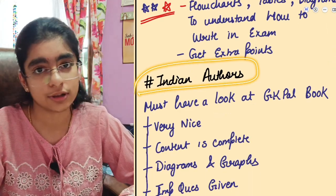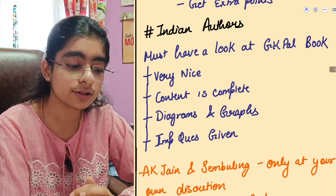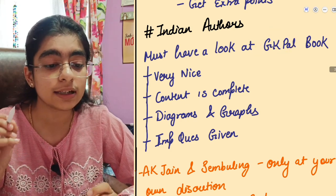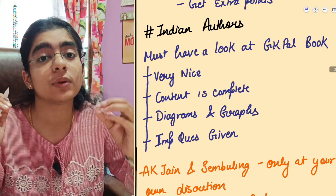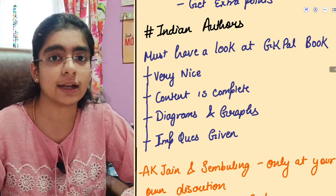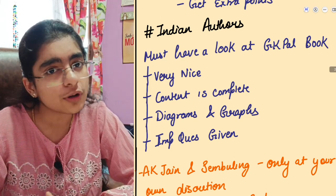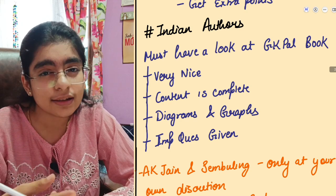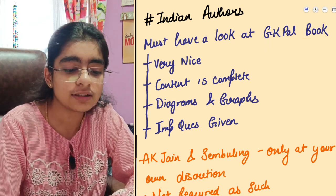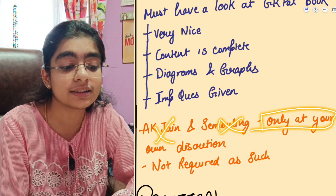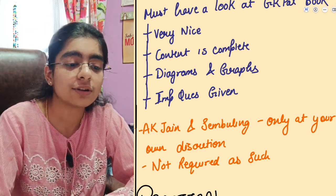Next come Indian authors. Among these, you must have a look at the GK Pal book. I found it very useful — it is not very famous but it is helpful because Guyton, Ganong, graphs, and everything is summarized there in an accumulated version. If you want easier language or CBME-type oriented content, follow GK Pal. I would not suggest AK Jain or Sembulingam — you can use them at your own discretion, but I didn't find them particularly necessary.